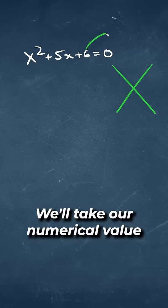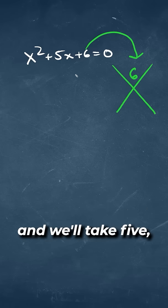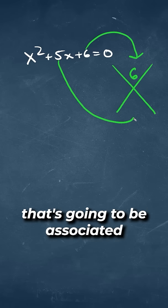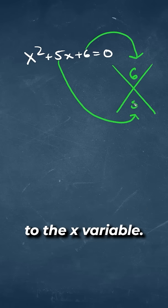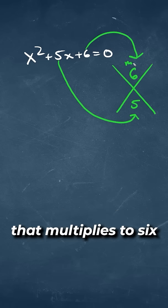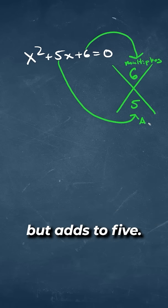We'll take our numerical value at the end, which is going to be 6, and we'll take 5, which is a middle value that's going to be associated to the x variable. We'll want to figure out a number that multiplies to 6, but adds to 5.